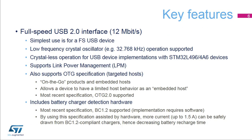This slide summarizes the key features of this full-speed OTG USB device interface, which is a USB specification 2.0 compliant interface operating at a bitrate of 12 megabits per second. In the simplest form, a full-speed USB device can be implemented. Low-frequency crystal operation is possible, and STM32L496-4A6 devices can work crystal-less. Its built-in support for link power management adds enhanced power modes on top of the USB 2.0 specification.